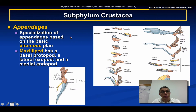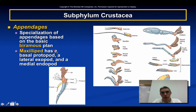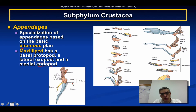The appendages of crustaceans are quite spectacular because of their variety and the many different jobs they perform. Specialization is based on the basic biramous, or two-part, plan. Looking at this particular appendage, we have two parts extending: the exopod and the endopod. This maxilloped has three parts — the exopod and endopod, plus the coxa and basis, which make up the protopod of the maxilloped. There is a lot of variety when it comes to appendages.